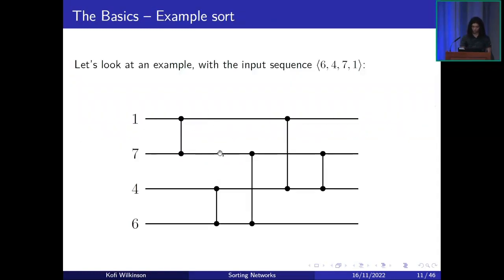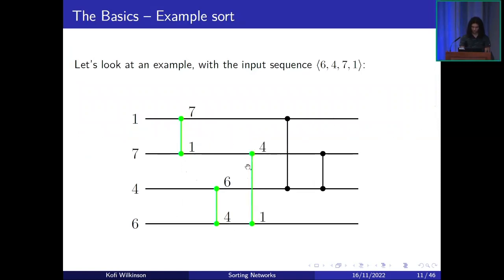Looking at an example sort: with input sequence 6, 4, 7, 1, the sorting network will first compare 1 with 7 and make a swap, because we want the smaller on the bottom wire and the larger on the top. Next it compares 4 with 6 and makes another swap. Then it compares 4 with 1 and makes another swap. Then 6 with 7 — no swap this time, because they're already in order. And finally 6 with 4, one last swap, and now we have a sorted output.